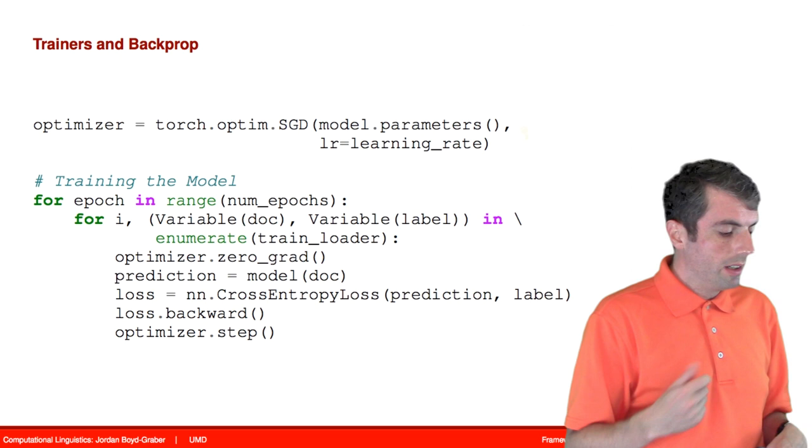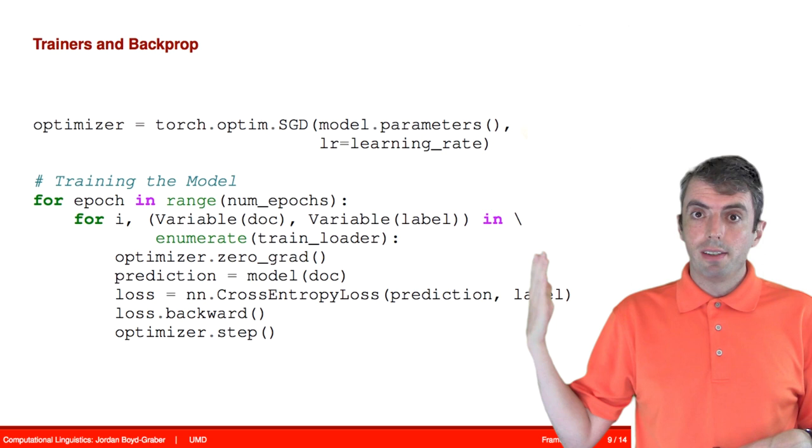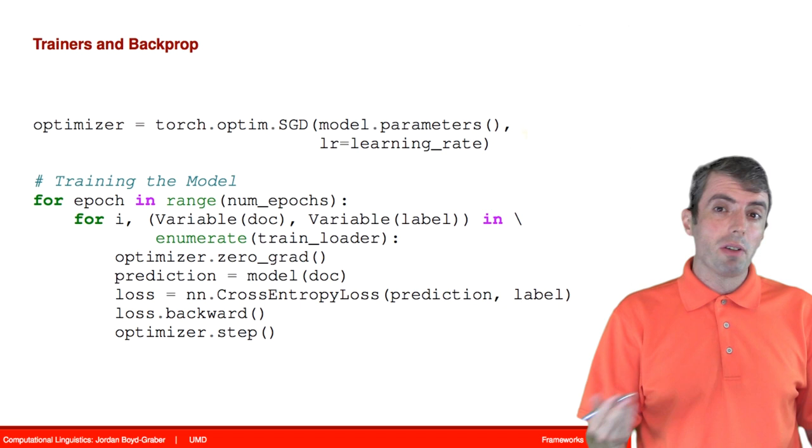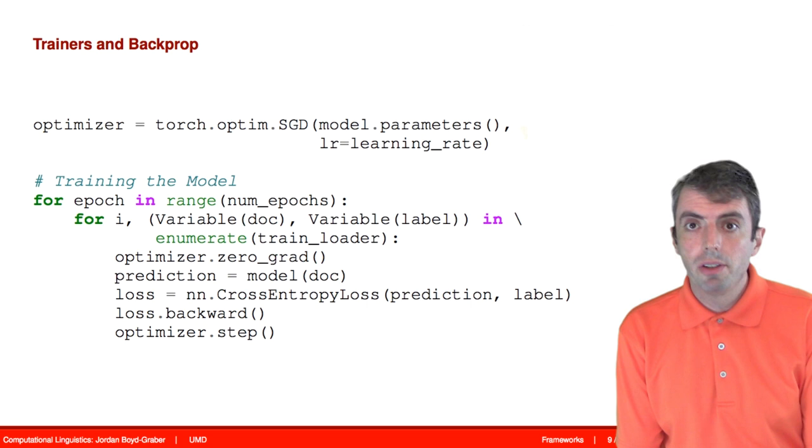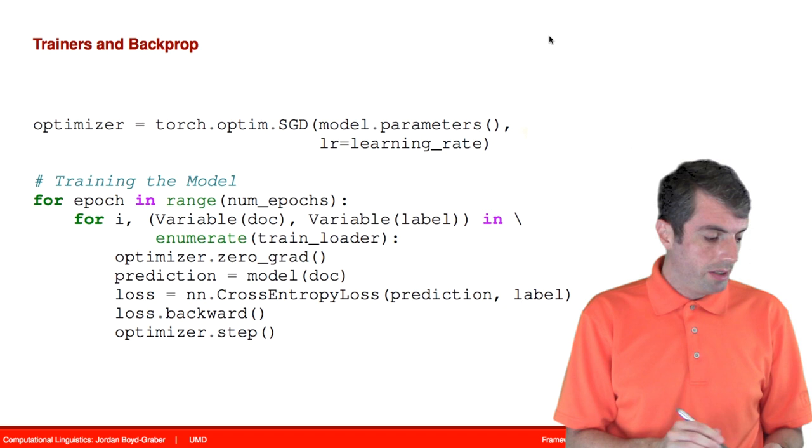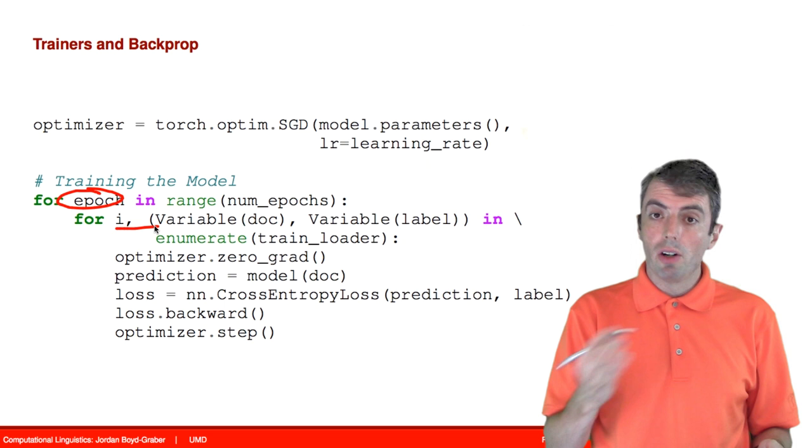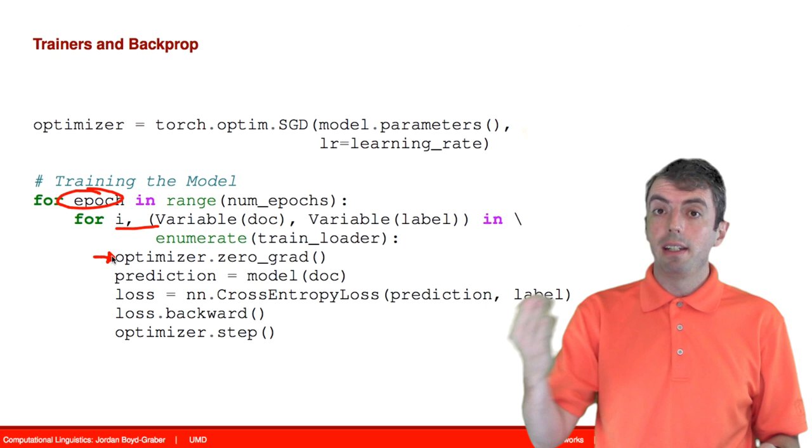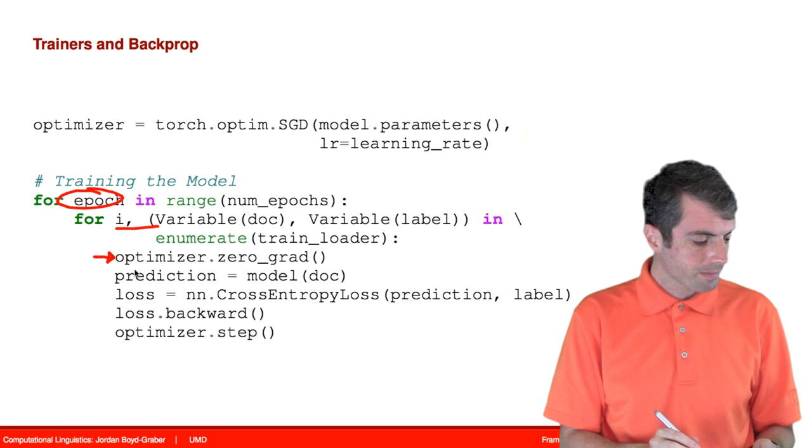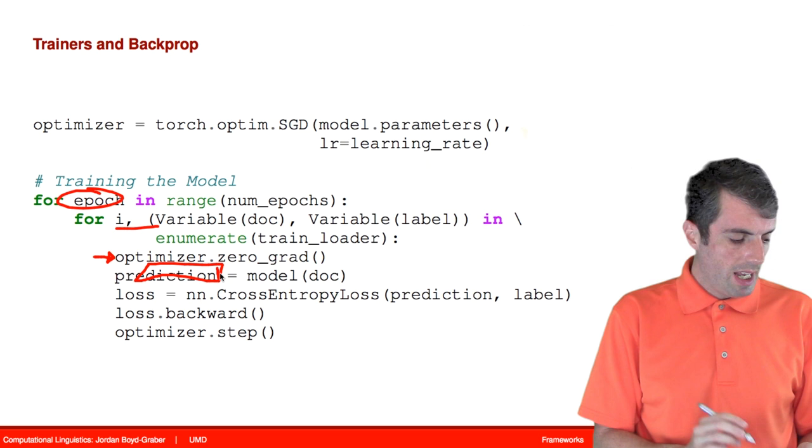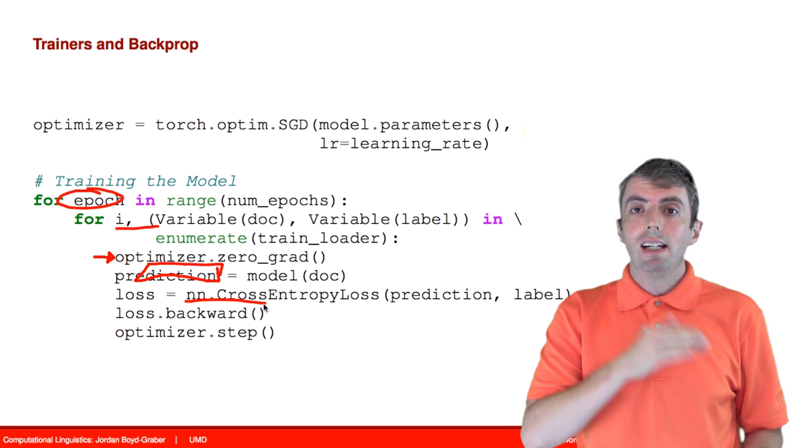So let's take a look at how this gets implemented in code for logistic regression. So in this case, let's say that you have your stochastic gradient descent optimizer. And all of these optimizers are going to have different parameters. And so stochastic gradient descent just has a learning rate. So you need to tell it what learning rate you're going to use. And then what we're going to do is we're going to run some number of epochs, i.e. how many passes are you going to take over the training data. And then for each example, you're going to first reset your optimizer. So your optimizer might have had some gradient before. So this resets it so that it knows that it's getting a new gradient. You're going to get the prediction of your model on a document.